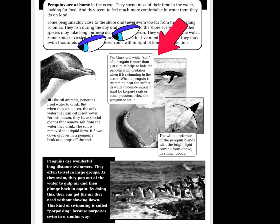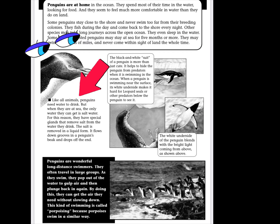Let's look at this first caption here. The black and white suit of a penguin is more than just cute — it helps to hide the penguin from predators when it's swimming in the ocean. When a penguin is swimming near the surface, its white underside makes it hard for leopard seals or other predators below the penguin to see it. This is very interesting and some of this information is already part of what we learned in the previous lesson. Moving over here, this caption next to the bullet point — which is also another text feature — says: like all animals, penguins need water to drink. But when they are at sea, the only water they can get is salt water. For this reason, they have special glands that remove salt from the water they drink. The salt is removed in a liquid form — it flows down grooves in a penguin's beak and drops off the end. I never knew that. That's very interesting. If I didn't read this caption, I would have missed that.